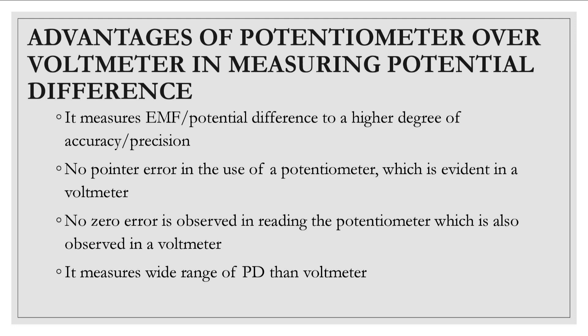While using a voltmeter there are certain degrees of inconsistencies, but when we're using potentiometer we get our answer to a high degree of precision. Number two, pointer errors can also be a challenge in the use of a voltmeter. Potentiometers don't have pointers so we can be assured that there won't be any pointer error. Also zero errors are challenges we face in using a voltmeter. Zero errors means that the pointer is not starting at zero point, it may be above zero or it may be below zero and that will add or reduce your value during the conduct of the experiment. Finally, potentiometers measure wide range of potential difference than the voltmeter.